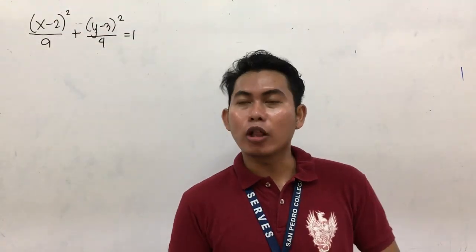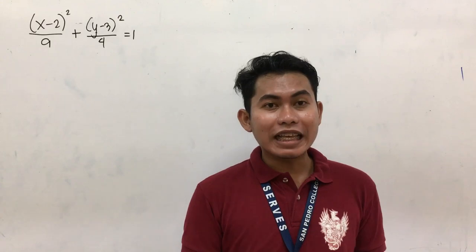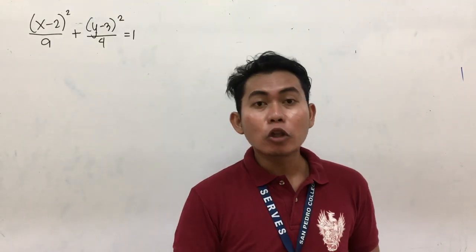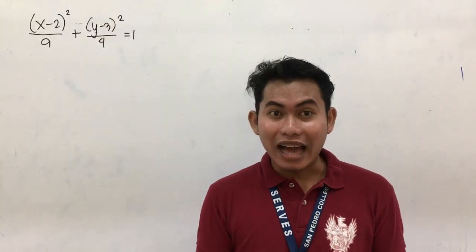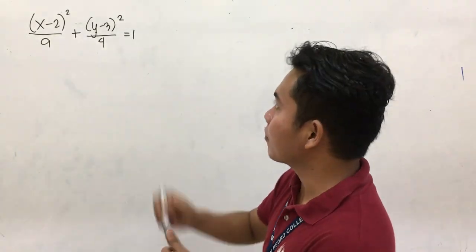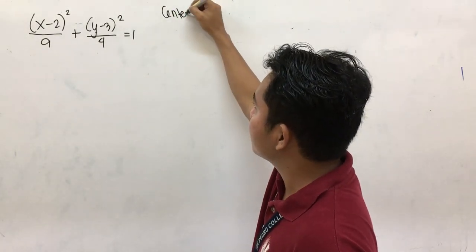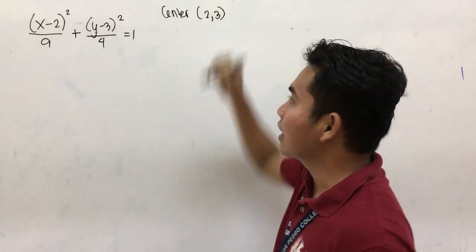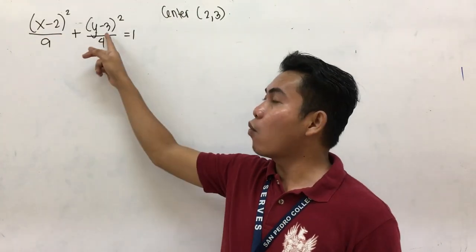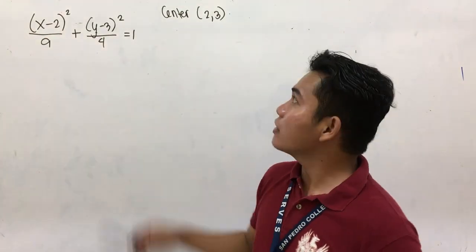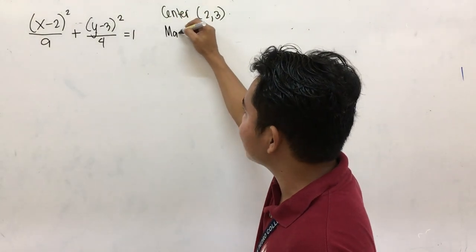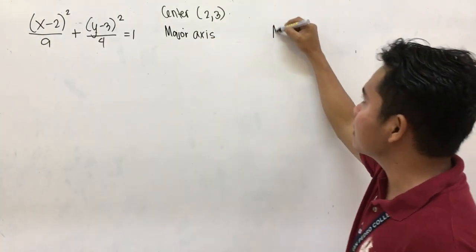For our first example, the given is in standard form, and we are going to transform this equation to general form. But before that, let's find the center of the given ellipse. Our center is 2 and 3. Take note: you are going to equate x minus 2 into 0 and y minus 3 into 0. That is why our center is (2, 3). And for our major axis and our minor axis...